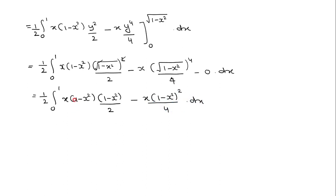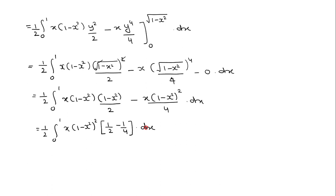Noting that (1 minus x²)(1 minus x²) = (1 minus x²)², we can take x(1 minus x²)² as common, leaving (1/2 minus 1/4) = 1/4. So the integral becomes (1/2)(1/4) ∫(0 to 1) x(1 minus x²)² dx = (1/8) ∫(0 to 1) x(1 minus x²)² dx.